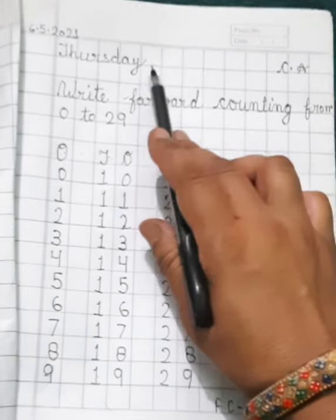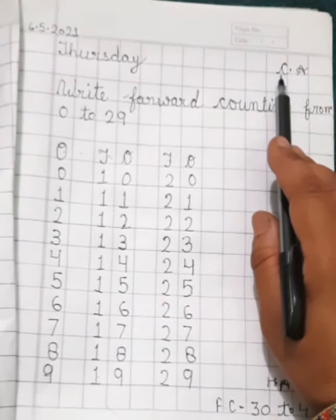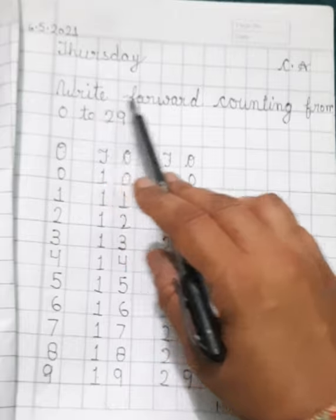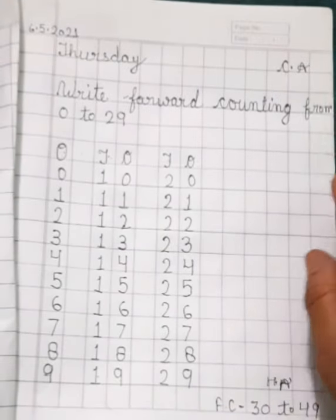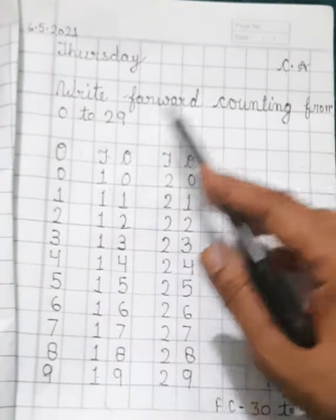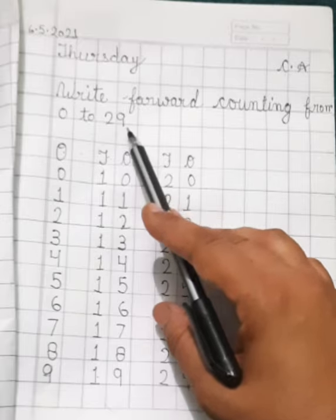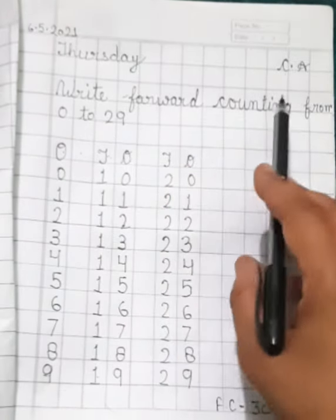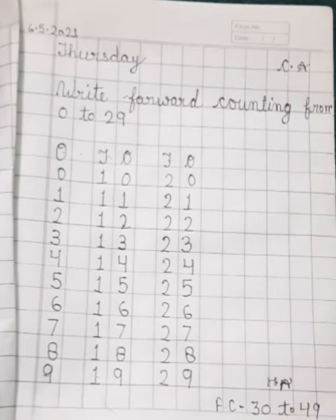Then day. You will write here H.A., and you will write this line. Write forward counting from thirty to forty nine. You will complete your counting from thirty to forty nine.